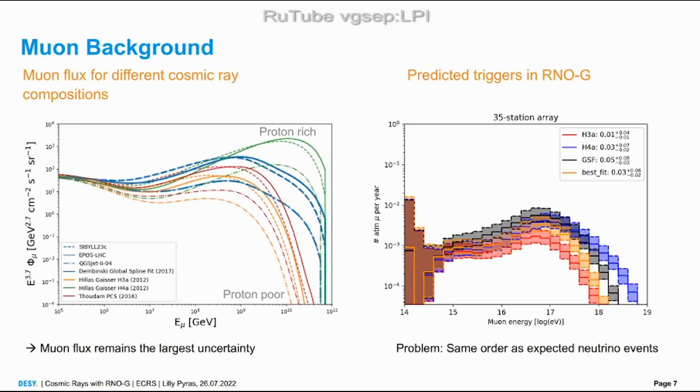I'll talk a bit more about the muon background. As we've seen this morning, the muon flux is a tough thing. I plotted it here for different hadronic interaction models, which is the line style, and for different cosmic ray compositions, a really proton-rich one and proton-poor one. You see that at the energies we are interested in, around 10^15 electron volts, this varies about three orders of magnitude.